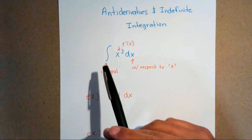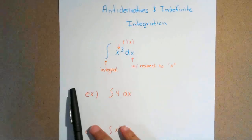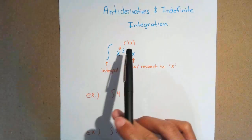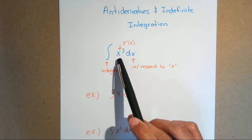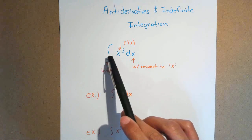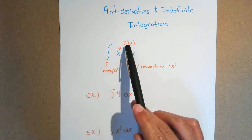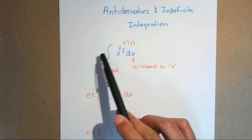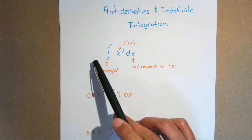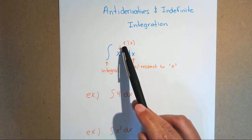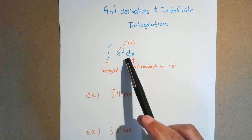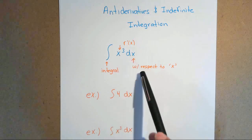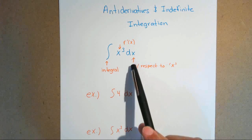When you see the integral symbol, it's going to give you a hint to find an antiderivative. Any equation you find inside the integral is your derivative, because what we're trying to do is go back to your original equation — trying to find f of x. Anytime you see dx or dt, any letter, it means we're working in respect to that letter. In this case, with respect to x.